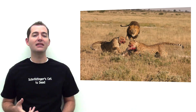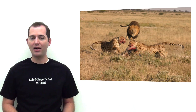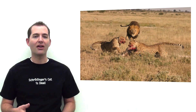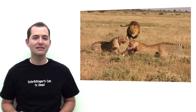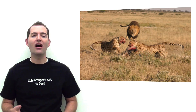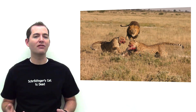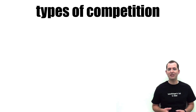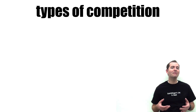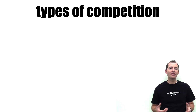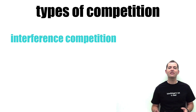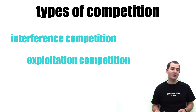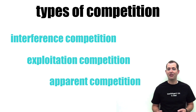For example, cheetahs and lions rely upon the same prey and are negatively affected by the presence of the other, often resulting in less food for one. There are three main types of competition representing the mechanisms or ways competition plays out: interference competition, exploitation competition, and apparent competition.